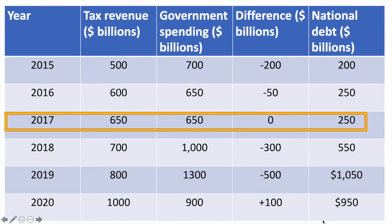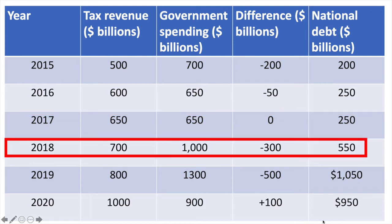In 2017 government tax revenues and spending were equal, so we say they balanced the budget this year, resulting in no change to the national debt. In 2018 government spending exceeded tax revenues collected by $300 billion, and another $300 billion was added to the national debt, bringing the total national debt to $550 billion.